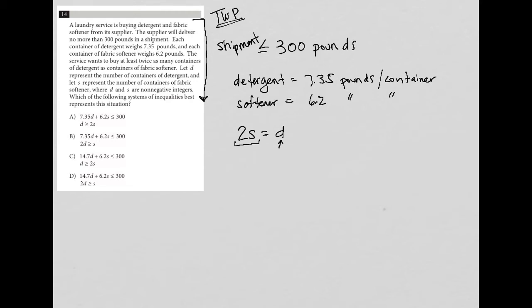Next is let D represent the number of containers of detergent, so we did that already. And let S represent the number of containers of fabric softener. So we did that as well. Where D and S are non-negative numbers, which makes complete sense. Which of the following systems of inequalities best represents the situation?